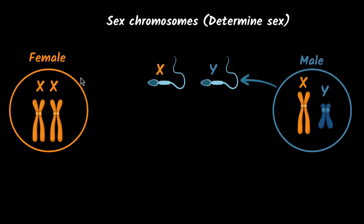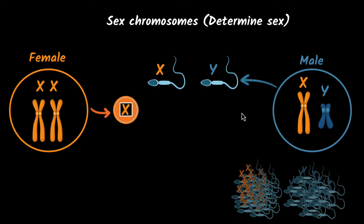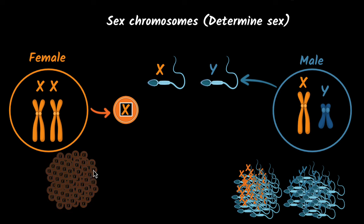What about female eggs? Well, in females both the chromosomes are X, therefore eggs can only have one kind — X chromosomes. Just to be clear, I don't mean that males will have only two sperms and females will have only one egg. We have lots of sperms and eggs. What I mean is that about half of the sperms will be X and about half will be Y. Similarly, we'll have lots of eggs, but all the eggs will only have the X chromosome. That's why I have drawn only one egg here.